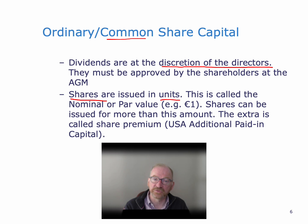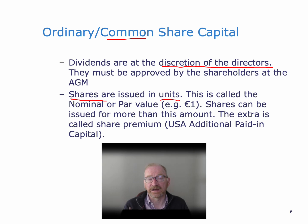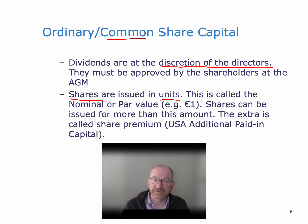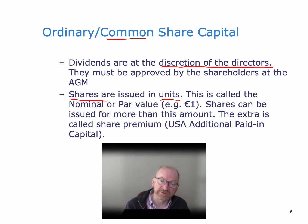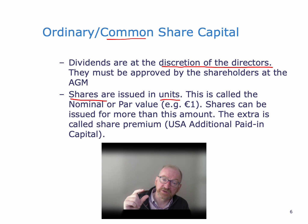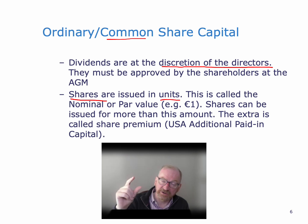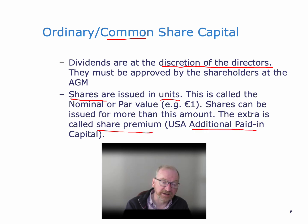The nominal or par value is conventionally one euro but it can be anything else — in some companies it's one cent. A lot of American companies have very low nominal or par values. Shares can be issued at above par value. For example, you could have a share with a par value of one euro and issue those shares for ten euro. In that case, one euro would go into ordinary share capital and the other nine euro would go into an account called share premium — or in the USA, additional paid-in capital.